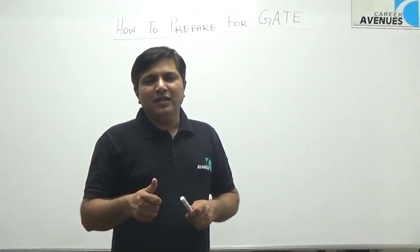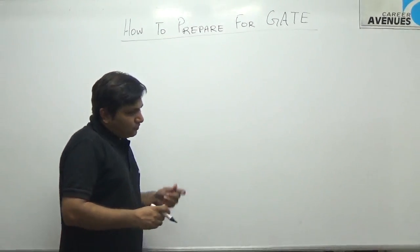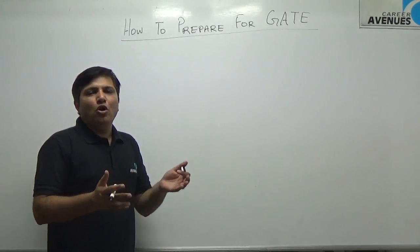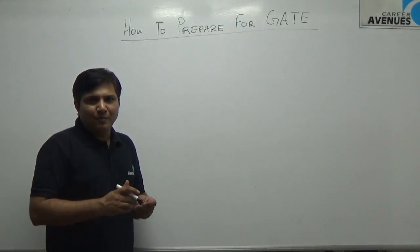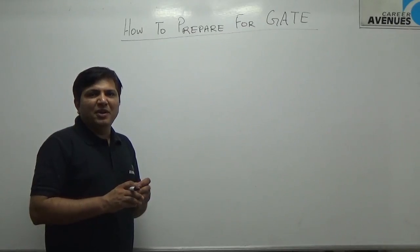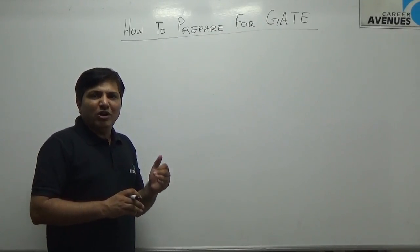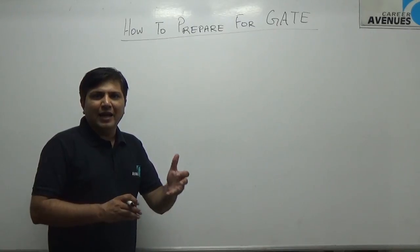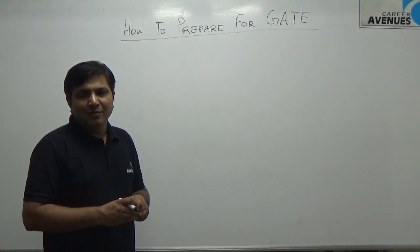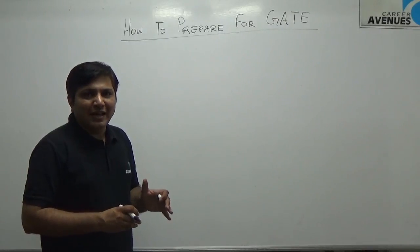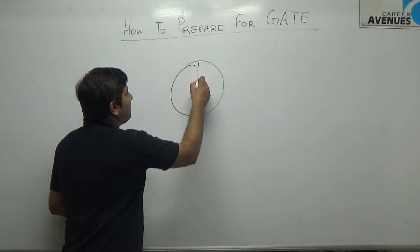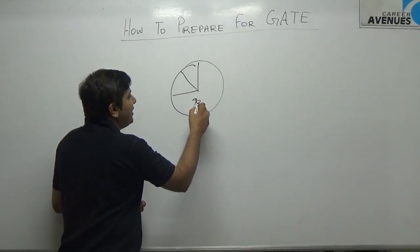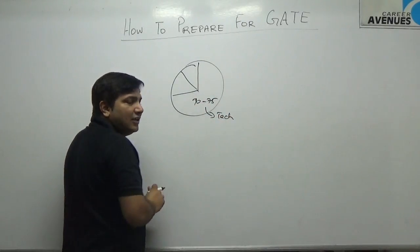The first and foremost thing students need to understand is the GATE pattern itself. When preparing for any examination, you look at previous years' papers. But here, I'm not talking about previous papers — I'm talking about the structure of the GATE examination. If you are from a branch like civil, electronics, mechanical, chemical, or biotechnology, the format of the paper is: out of about 100 marks, 70 to 75 percent is technical.